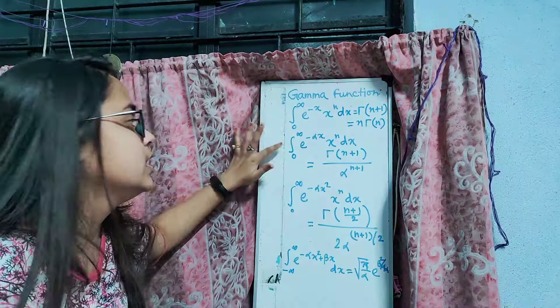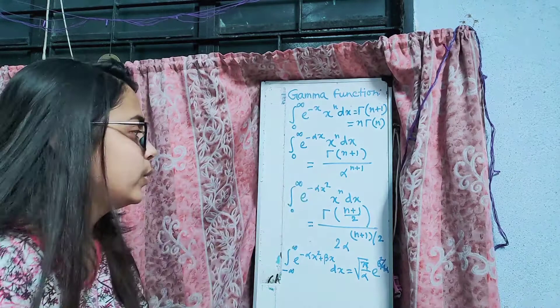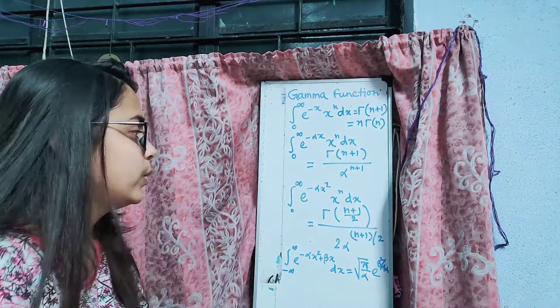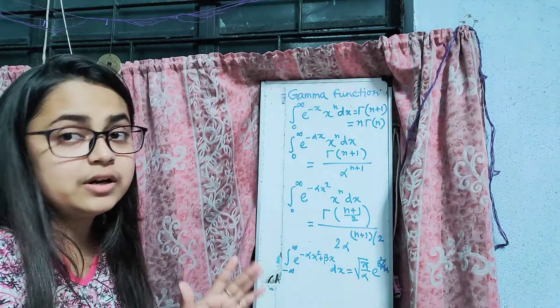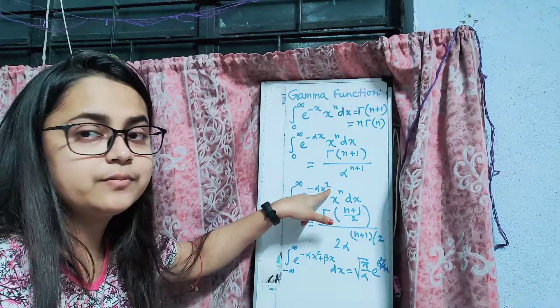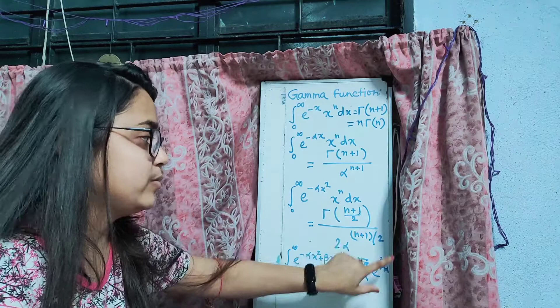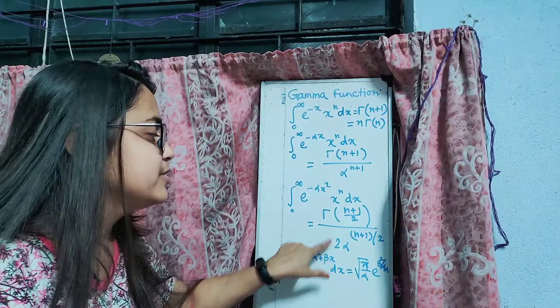Number three: the integral from 0 to infinity of e to the power minus alpha x squared, times x to the power n, dx. Here the exponent is x squared rather than x, and alpha is again multiplied. Because of the quadratic power 2, the gamma function argument becomes (n+1)/2 instead of n+1. The result is: gamma of (n+1)/2, divided by 2 times alpha to the power (n+1)/2. This is our third formula.